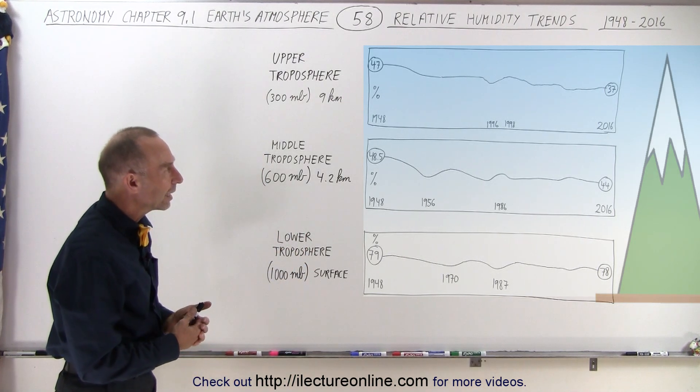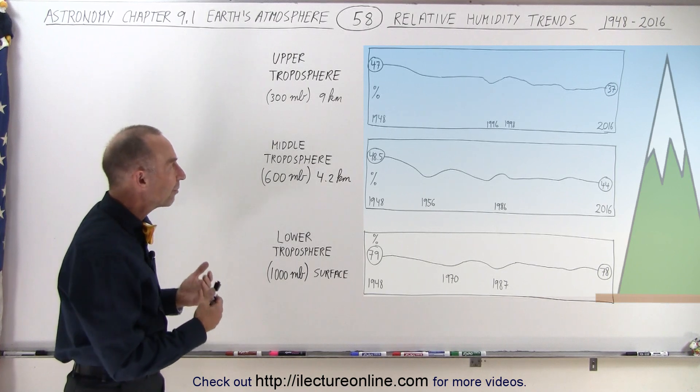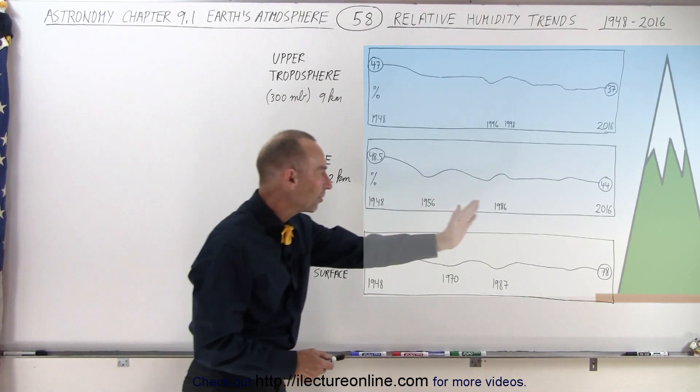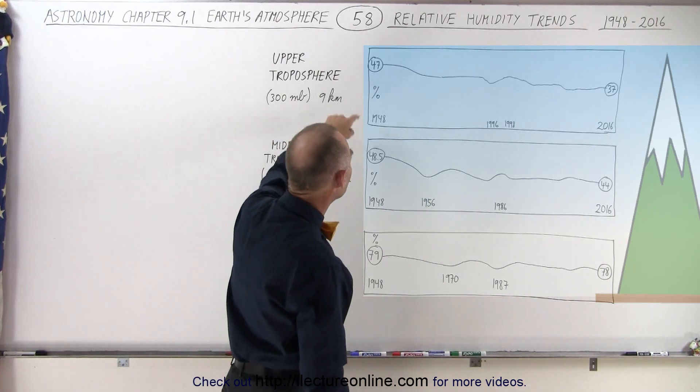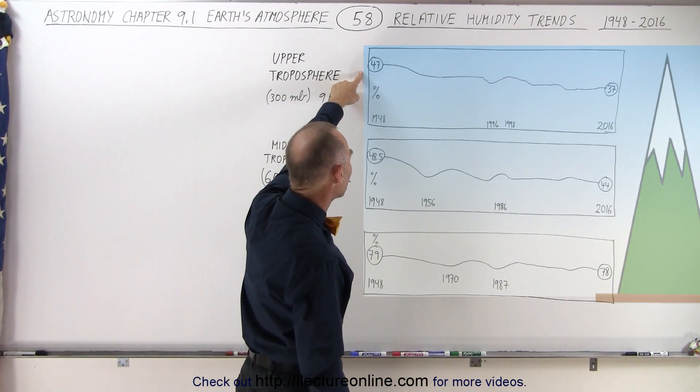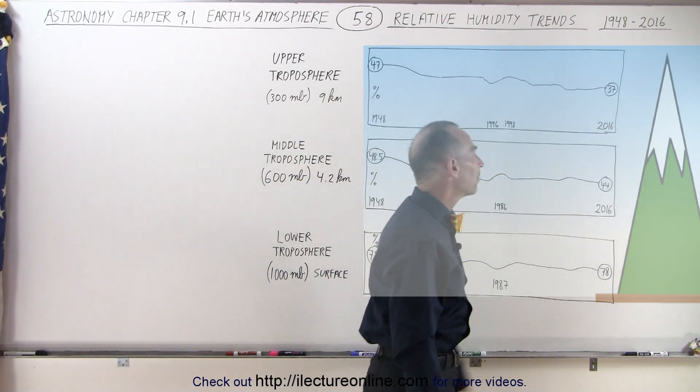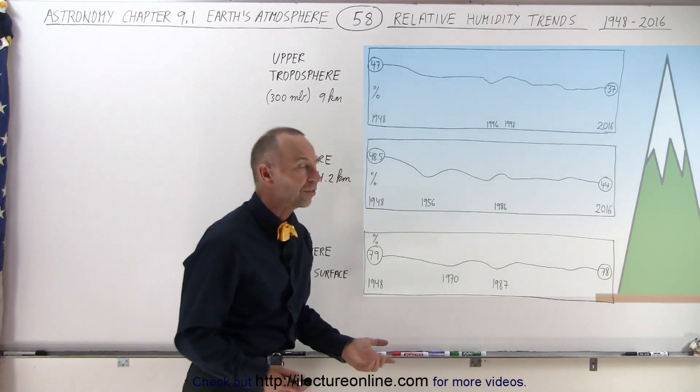And surprisingly, in all three cases, the relative humidity seems to have dropped since 1948 compared to 2016. You can see that it started out at about 47 percent in 1948 and dropped consistently till it hit about 37 percent in 2016.